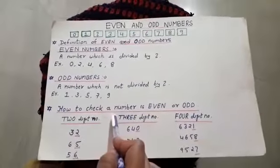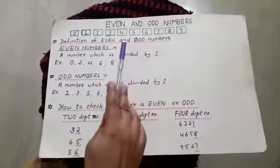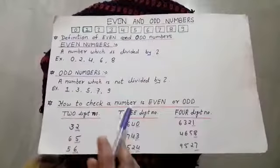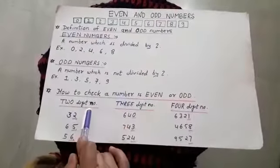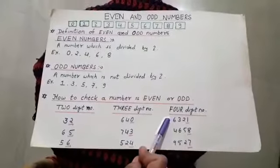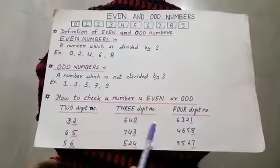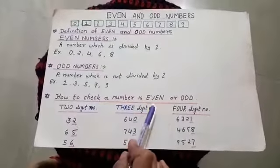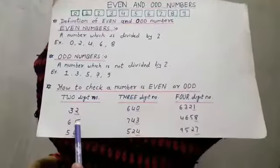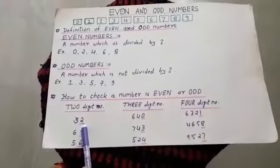So children, you understood up to 10 which numbers are even or odd. But if there is a 2-digit number, 3-digit number, 4-digit number, or any number, how do you check if a number is even or odd? We first look at the last digit of the number.